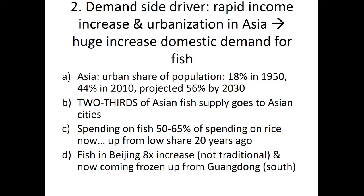Let's think about the demand side of Asia on the fish side. The first big driver, just as in the US, is urbanization — going from 18% to 44% to 56% of the population in Asian cities. The share of cities in the market is actually understated because urban incomes are higher, so two-thirds to three-quarters of Asian fish goes to Asian cities, another 10% to export, and the rest to rural areas. Fish spending is trending toward equality with basic grain expenditure — reaching 50 to 65% of rice spending — up from a very low share just 20 years ago. These are not gradual processes; these are sudden processes.